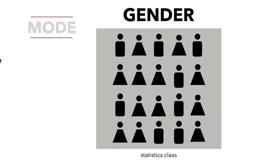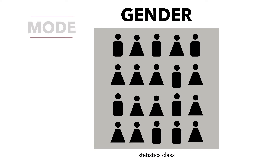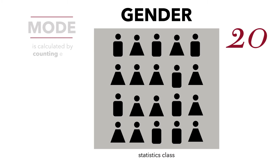Here's the data we previously used in our frequency distribution and graphing exercises and tutorials. This shows the variable gender and the 20 students in the statistics class and their gender. The mode, which is the most frequent category, is easily calculated by counting each value or category.